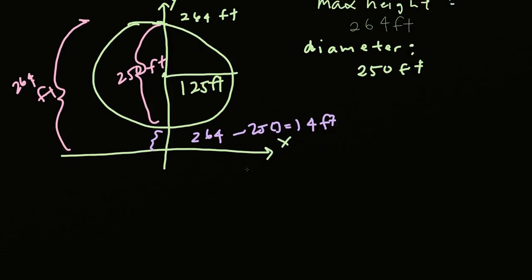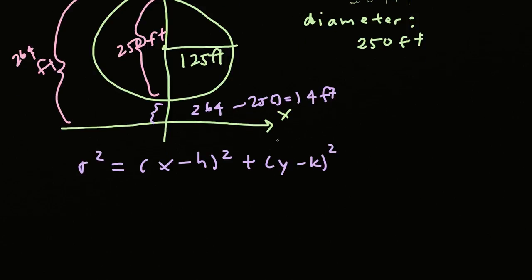Now we want to write this with all this given information into the standard form of the equation of a circle. So recall what the standard form of a circle is from the previous video: r² = (x - h)² + (y - k)². We don't have the h and k because h and k is the center, we don't know where the center is, but we do have one information and that is the radius. So it's 125 squared.